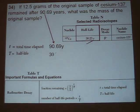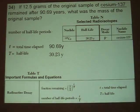If we take big T, which is the half-life, 30.23 years, we can see on the reference table, Table T, that the number of half-life periods is equal to little t divided by big T.